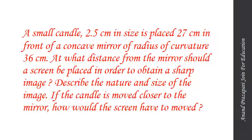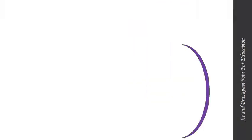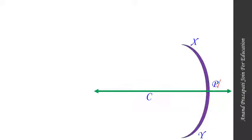I am going to draw a relevant ray diagram of image formation according to the question. XY is a concave mirror, P is the pole of the concave mirror, C is the center of curvature, and F is the main focus of the concave mirror. An object AB is placed on the principal axis of the concave mirror at a distance of 27 cm according to the question.